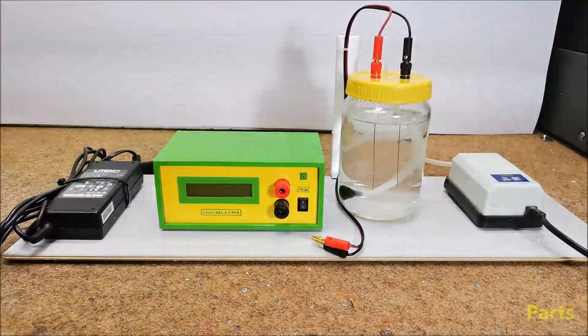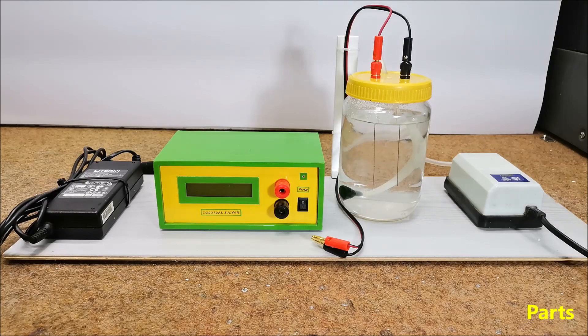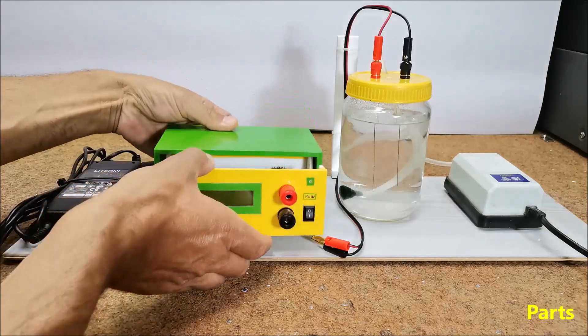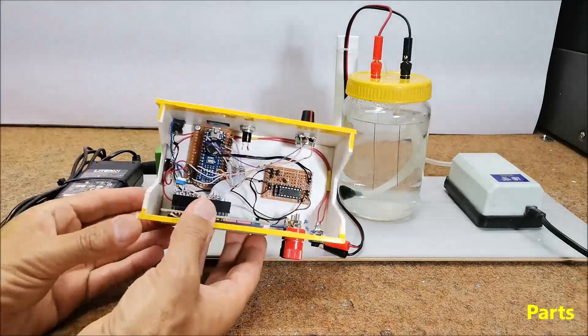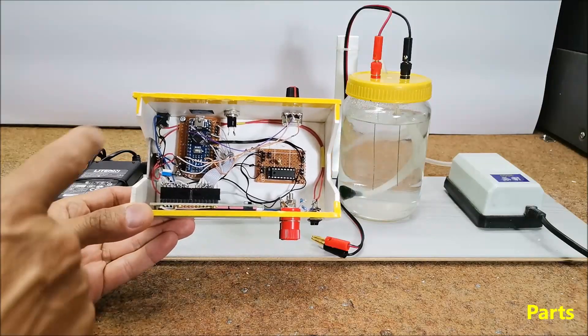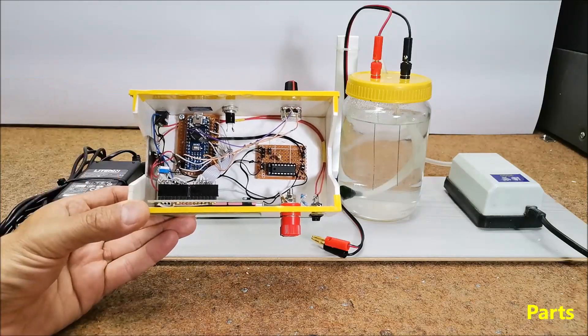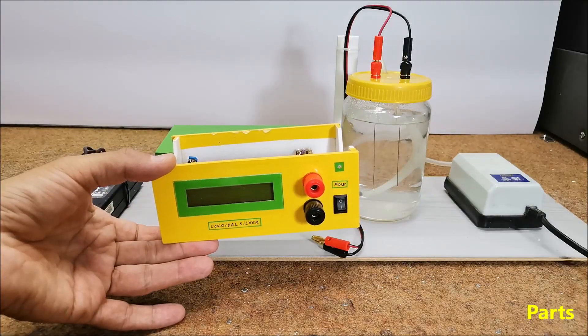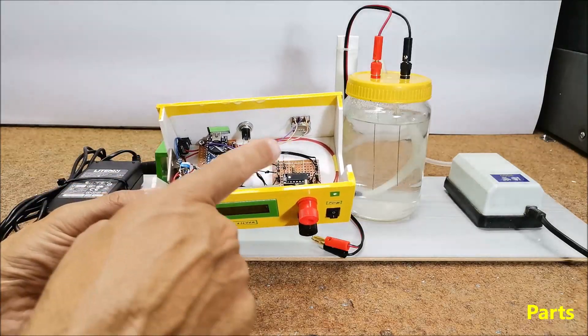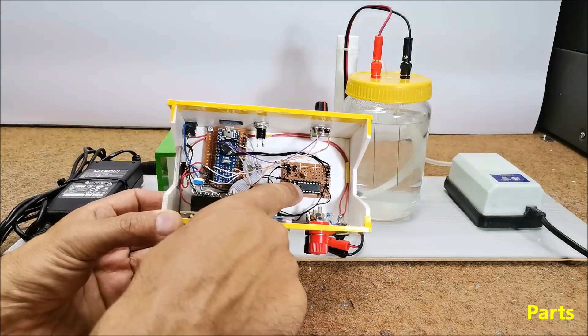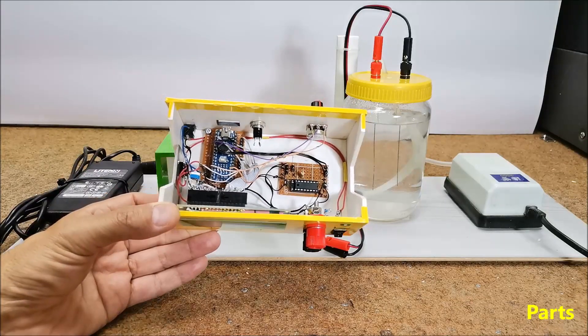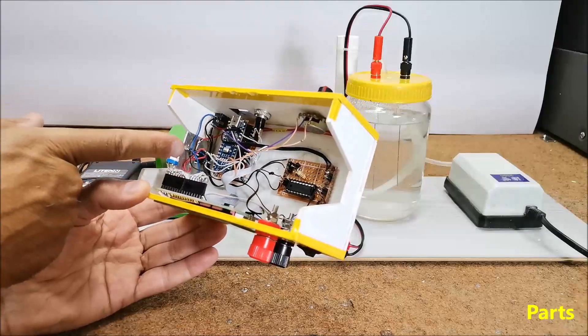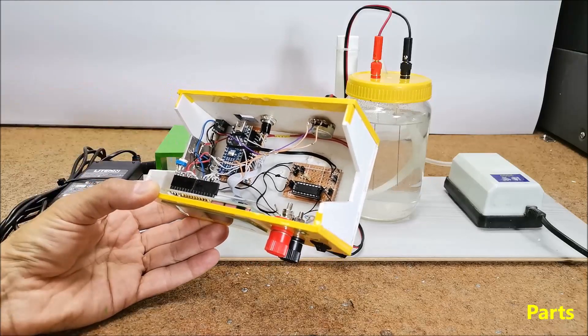The device is relatively easy to build and consists of several components. First, Arduino Nano microcontroller, 16 by 2 LCD display, L293D motor driver integrated circuit, 7805 voltage regulator, potentiometer.